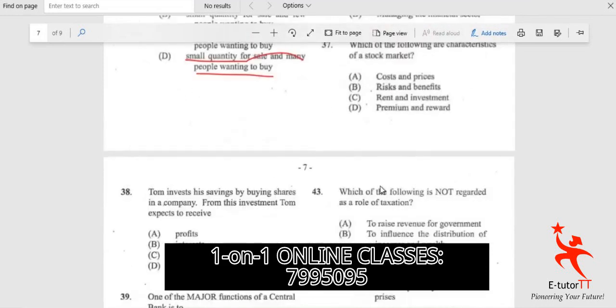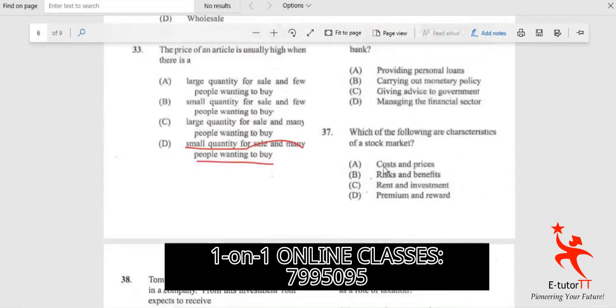Question 37: Which of the following are characteristics of the stock market? We have the stock market where you have the ability to sell shares. Usually in the stock market there's a lot of high risk but you also get high rewards. So here, the characteristics would be risk and benefits based on the stock market.